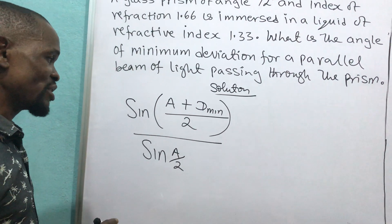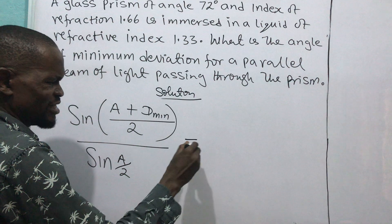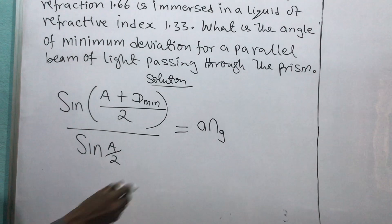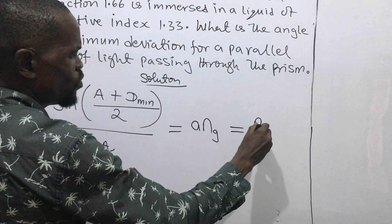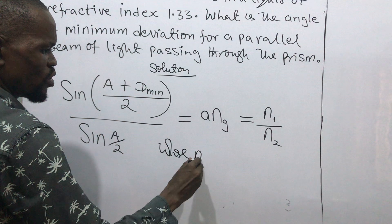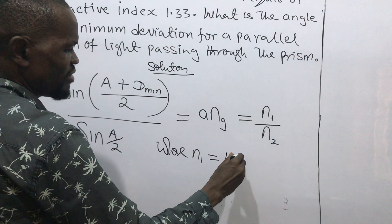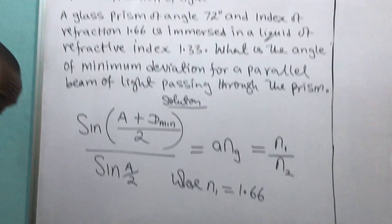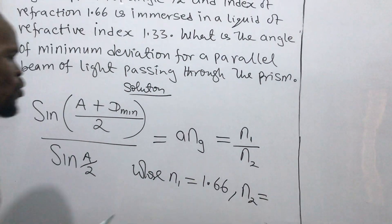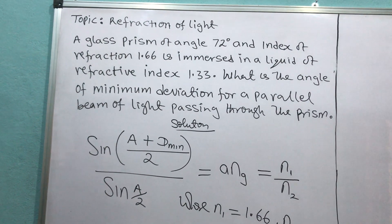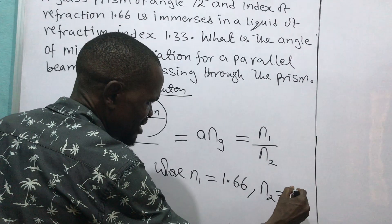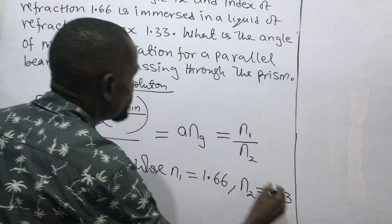The angle of refraction becomes this, and is equal to the refractive index from air to glass, which is the same as n1 over n2. Where n1 is equal to the refractive index of the prism, which we already know. Then n2 becomes the refractive index of the second medium — where we insert the prism in the liquid — that means the refractive index of the liquid, 1.33, which is given.